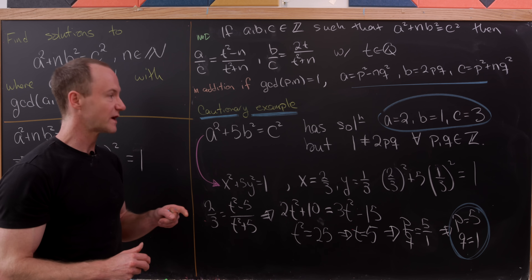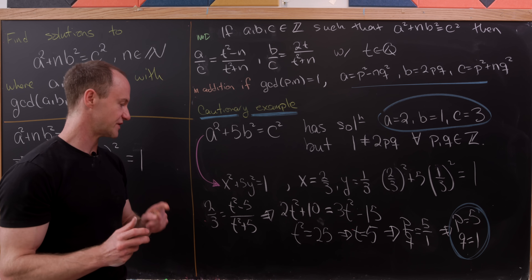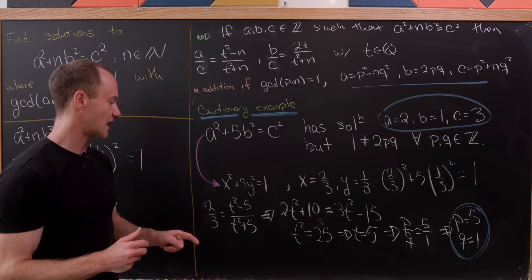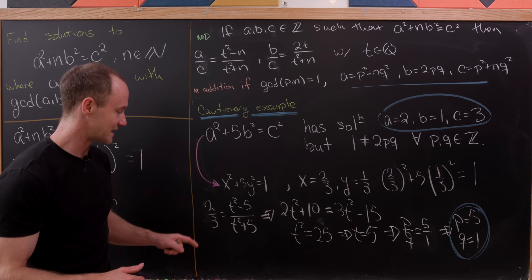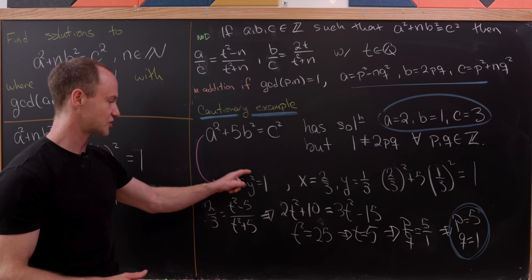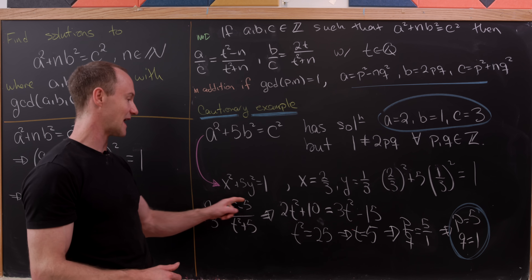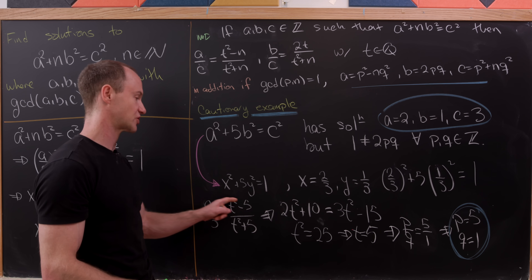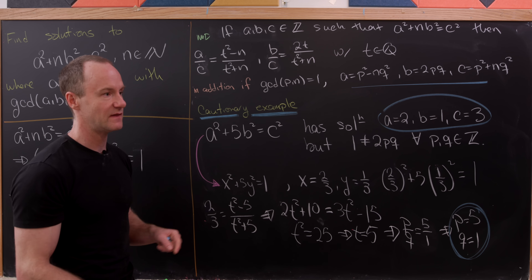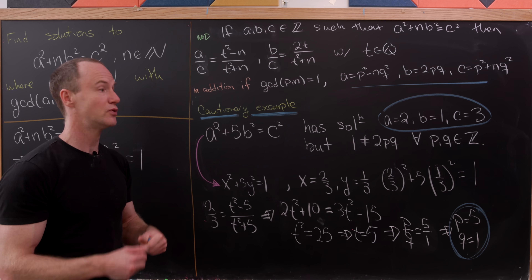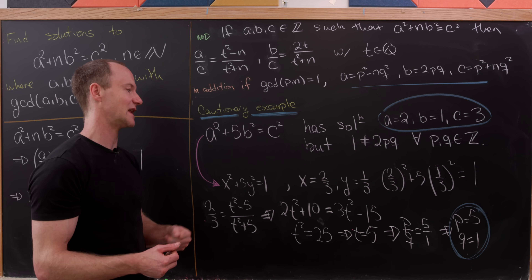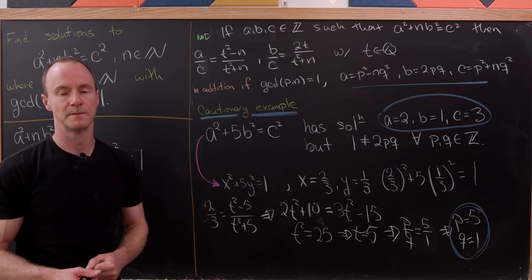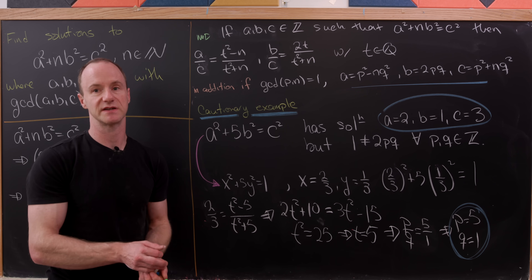The real parameterization of these missing solutions should be thought of as the parameterization given by the rational-number equation, and then pushing that into an integer equation. That's a good place to stop.